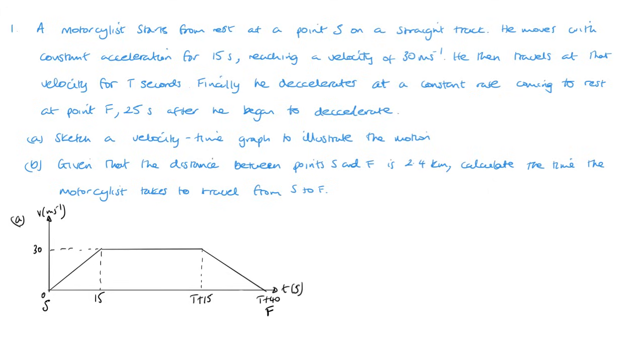You don't really have to put the S and the F in. Now for part b, given that the distance between S and F is 2.4 kilometers, calculate the time the motorcyclist takes to travel from S to F. So we can work out the distance traveled in this section here while he's accelerating.